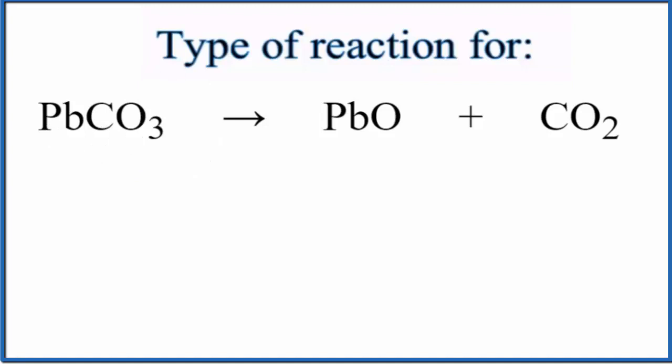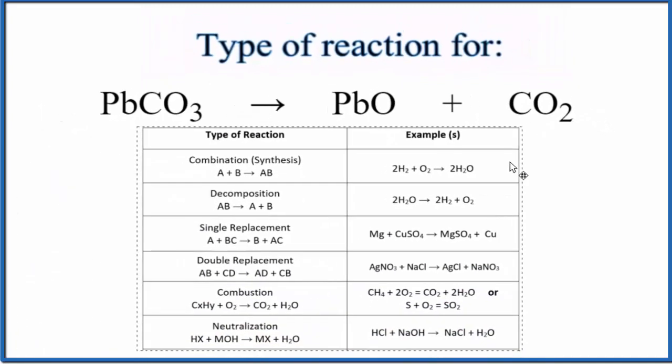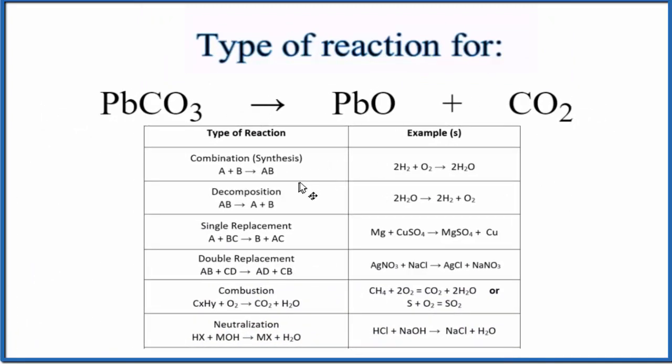Let's take a look at this table of common types of reactions. As we look down our list, we'll see here's our decomposition. We have AB goes to A plus B. So you could consider this AB and this A plus B. So decomposition reaction.